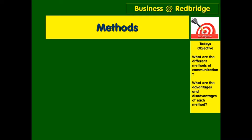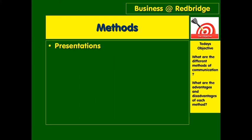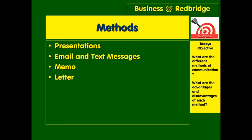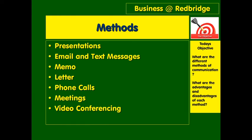Hopefully you had a go at the starter and came up with some communication methods. These are mainly the ones covered in the OCR business exam: presentations, email and text messages, memo, letter, phone calls, meetings, and video conferencing. These are the main methods a business tends to use at the moment. With technology advancing quickly, things do change, but these are some traditional and some new methods of communicating within a business.